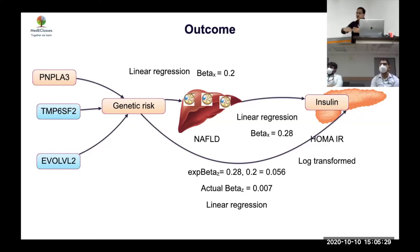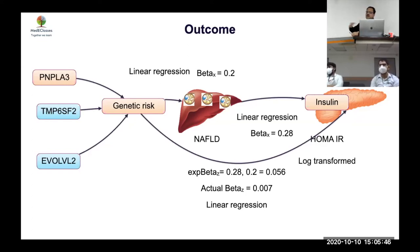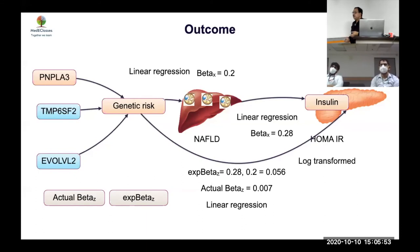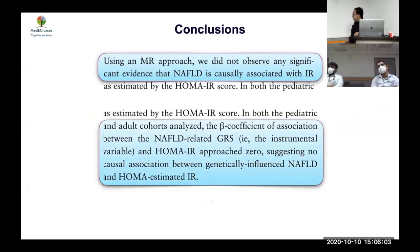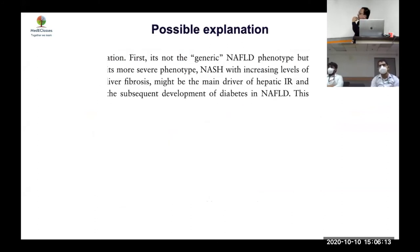The clinical message: if you improve insulin resistance, you may not improve fatty liver, because insulin resistance is not causing it. Giving metformin will not necessarily help NAFLD. Conversely, correcting fatty liver will not fix diabetes. These are different pathways altogether. The actual beta from genetic risk to insulin resistance was close to zero, making the Mendelian randomization result clear: NAFLD is not causally related to insulin resistance.